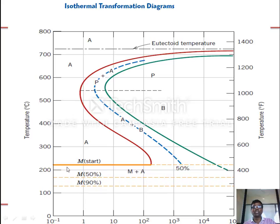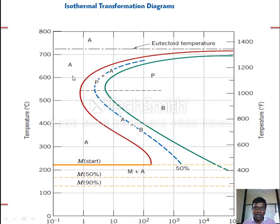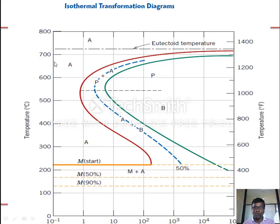Below approximately 225°C is martensite. When you cool the eutectoid austenite and hold it at around 600°C, it goes through pearlite and austenite, completing transformation after the curve — around 100 seconds it becomes fully pearlite. If you rapidly cool it, it becomes martensite with no intermediate transformation. If you hold at around 450°C and then rapidly cool, it transforms through austenite to bainite.